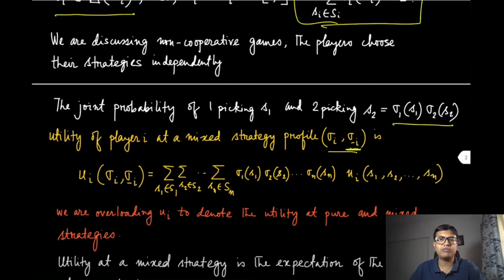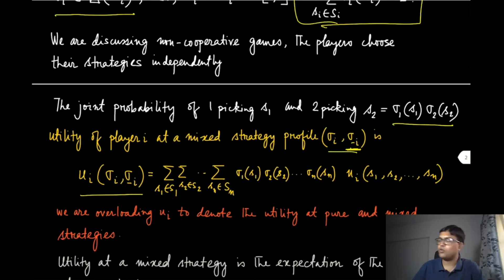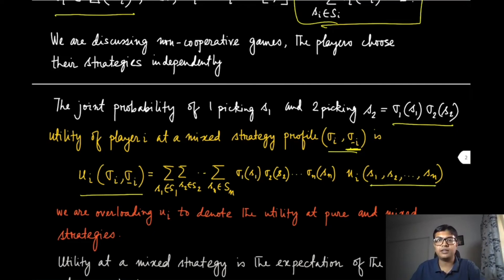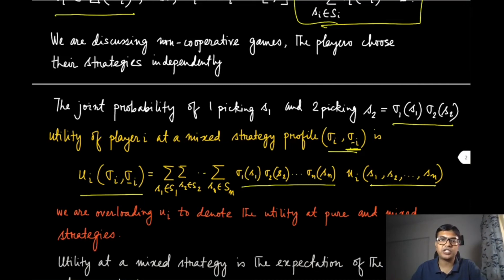When we use the utility of player i at a mixed strategy profile — where sigma_i is one element in Delta(S_i) and sigma_{-i} denotes the mixed strategy profile of all other players except player i — we define it as follows: we first look at the utility at a pure strategy profile s1 to sn and multiply that with the corresponding probability of picking that strategy profile. Because these are all independent, this will just be products, and then we sum over all possible strategies of all players, giving us an expected utility over all strategy profiles.